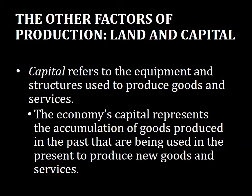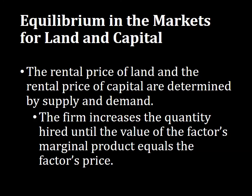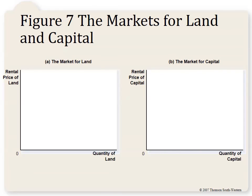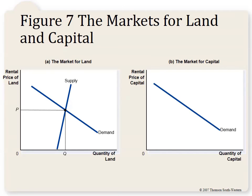The supply of other factors of production: capital refers to machinery, tools, and equipment. Capital is a society's investment in the future — producing capital means delaying production of a consumer good now to invest later. The rental price of land and capital are determined by supply and demand, and just like labor, firms use land and capital up until the rental price equals the VMPL.